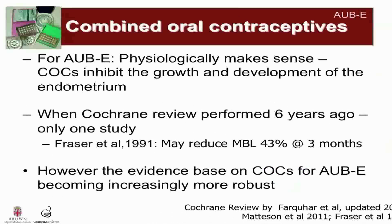The next treatment to discuss is combined oral contraceptives. Physiologically, it makes sense that oral contraceptives would work in treating abnormal uterine bleeding by inhibiting the growth and development of the endometrium. When the Cochrane Review was performed about six years ago, there was only one study by Fraser et al., which compared combined oral contraceptives, danazole, and two different NSAIDs for treatment of heavy and regular bleeding. Though they found no differences between the groups, the women treated with combined oral contraceptives had a three percent reduction in menstrual blood loss at three months. However, the evidence based on combined oral contraceptives for treating AUB caused by endometrial dysfunction is becoming increasingly more robust.